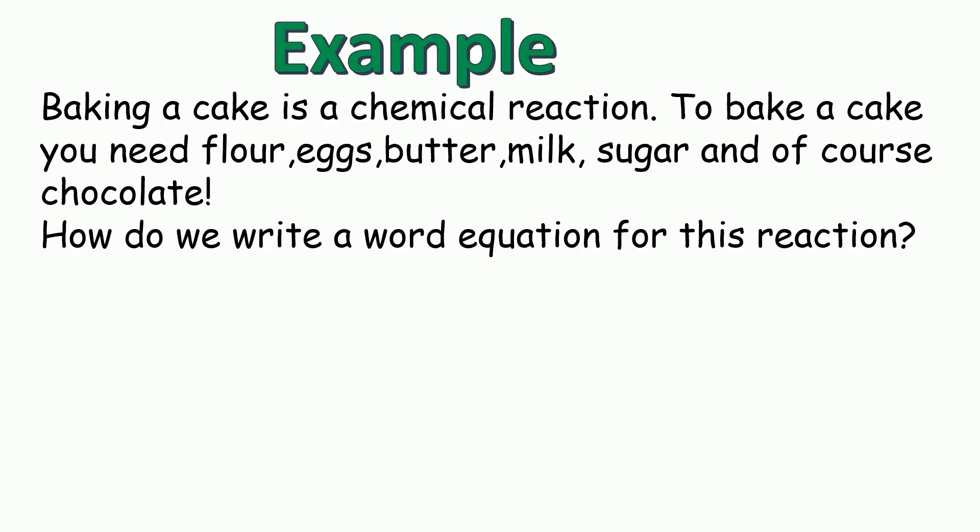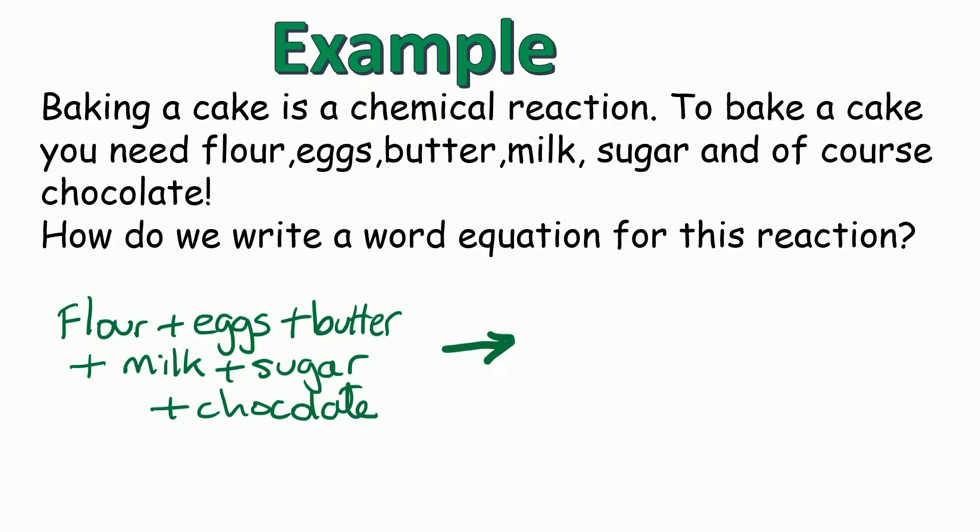Well we start off by putting the arrow roughly in the middle of your page, and then on the left we're going to need to put our starting chemicals, or in this case the ingredients. So we would write flour plus eggs plus butter plus milk plus sugar plus chocolate. Think of the plus signs like the word and, so we've got flour and eggs and butter and so on.